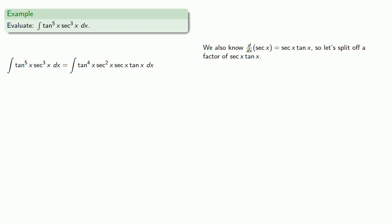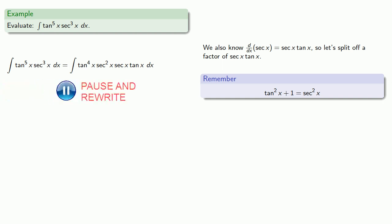Remember, the Pythagorean identity is in terms of the square of a trigonometric function. So let's rewrite our integrand a little. Remember, tangent squared x plus 1 equals secant squared. And so, we can replace tangent squared x.